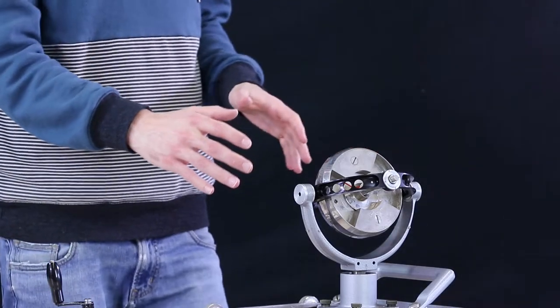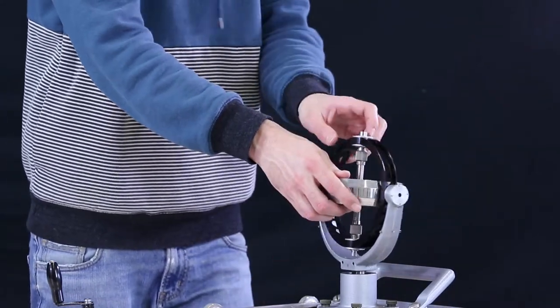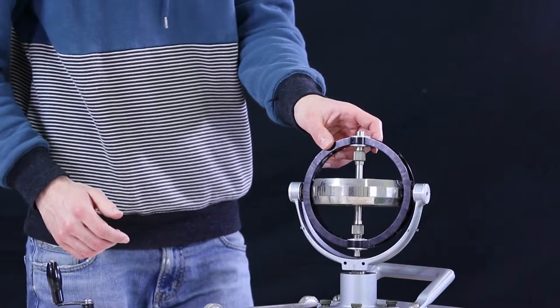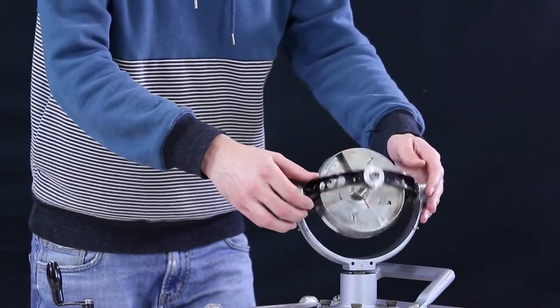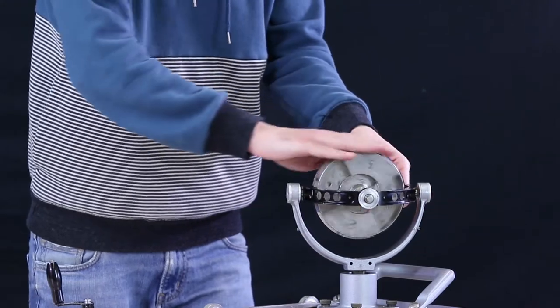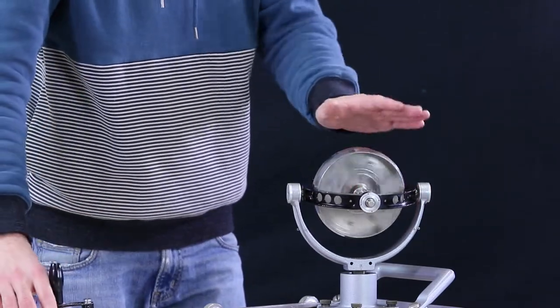This is a gyroscope. It is a disc mounted on a gimbal so that it can rotate around three axes. One, two and three. Let's set the disc rotating.